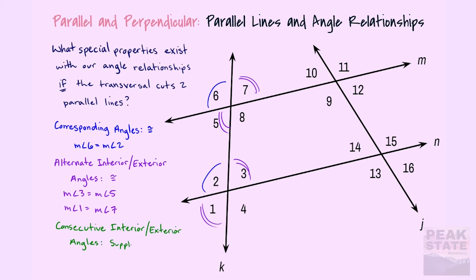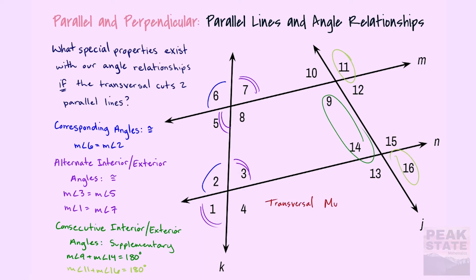The other special property we're looking at today is consecutive interior and exterior angles, and we know those are supplementary — they add up to 180 degrees. An example for consecutive interior would be angles nine and fourteen; consecutive exteriors would be something like eleven and sixteen. These are on the same side of the transversal, while alternates are on opposite sides.